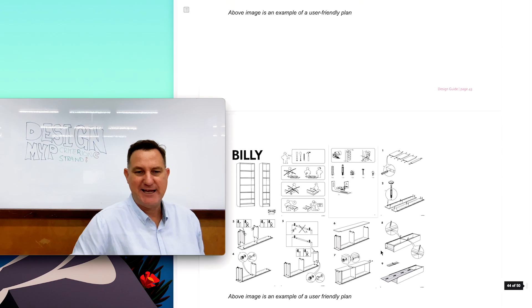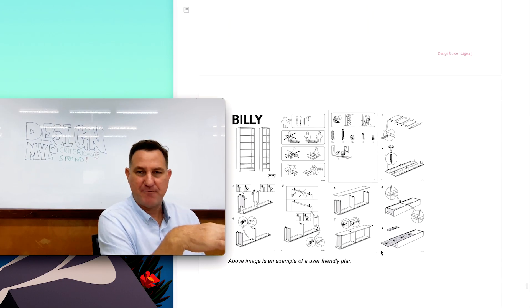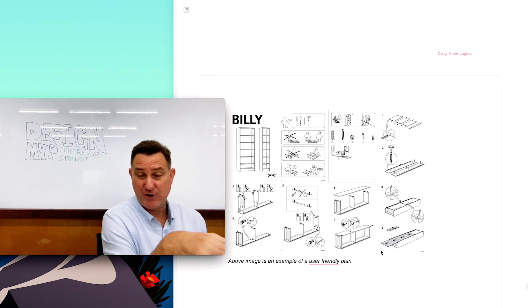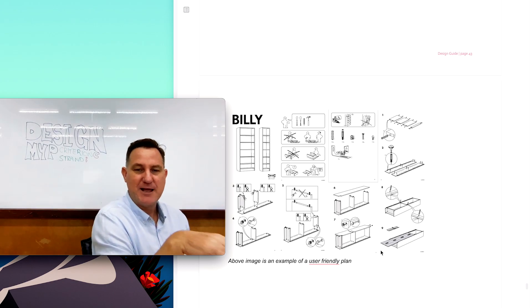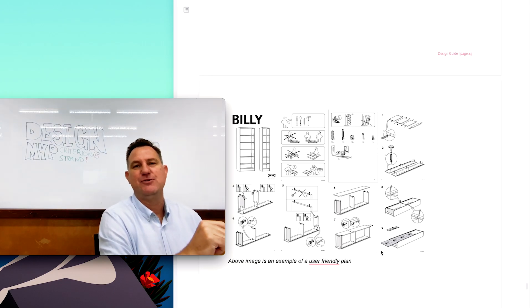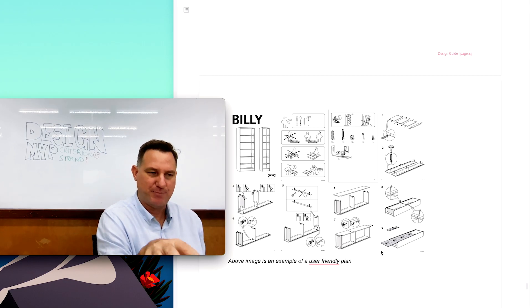Another user friendly plan is IKEA. IKEA produce flat pack furniture. So the concept is you take it home and then you build it. If you look at an IKEA manual, it's very user friendly, and it's easy to understand. People can pick that IKEA plan up and follow along.